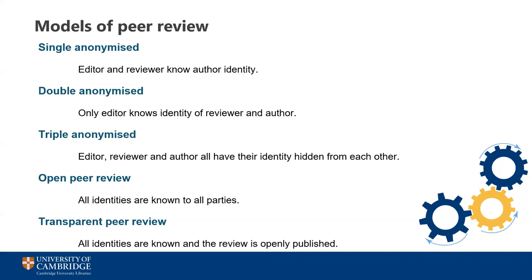Under the single anonymized review system, both the editor and the reviewer know the identity of the author, but the author does not know the identity of the reviewer. This is one of the most established models and reviewer anonymity means they can be free to be honest in their assessment, and may be able to use the identity of the author and build on knowledge of their previous work. However, authors are not protected from any bias — conscious or unconscious — if reviewers know their identity. Some reviewers may see the name of an institution as a surrogate for the quality of the research, and therefore it may not come under proper scrutiny.